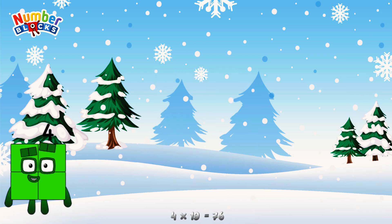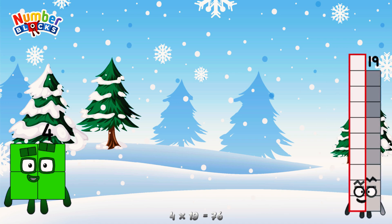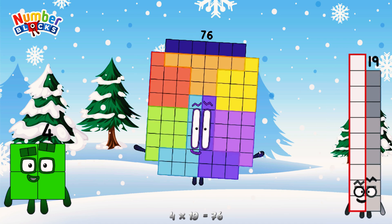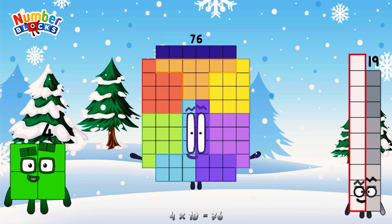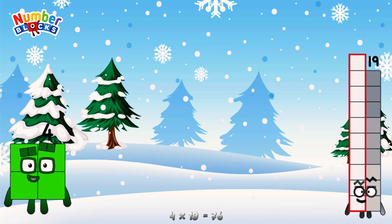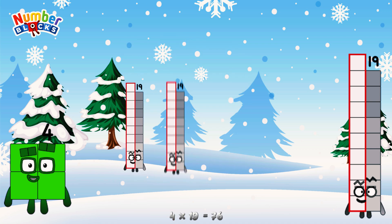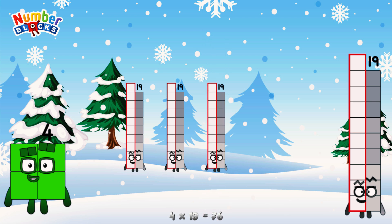4 times 19 is equal to 76. Or, we have 4 19s: 19, 38, 57, 76.